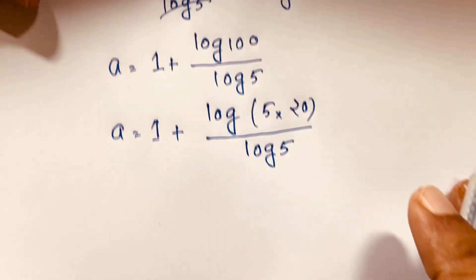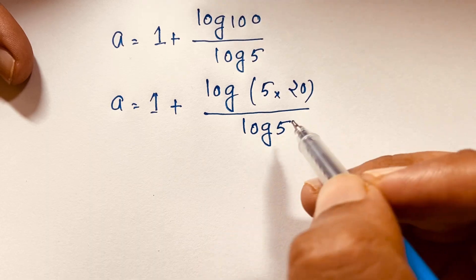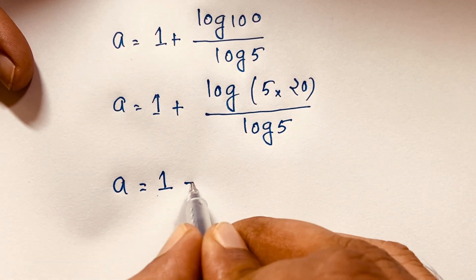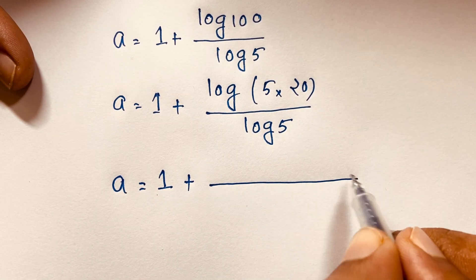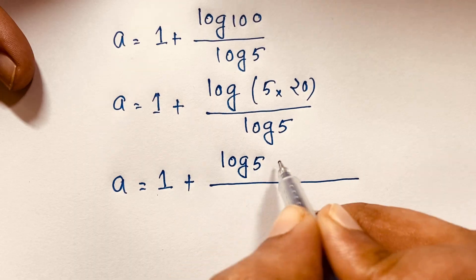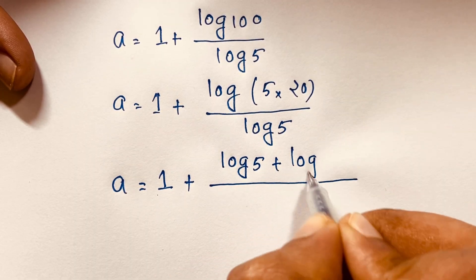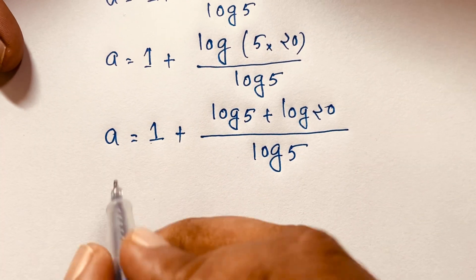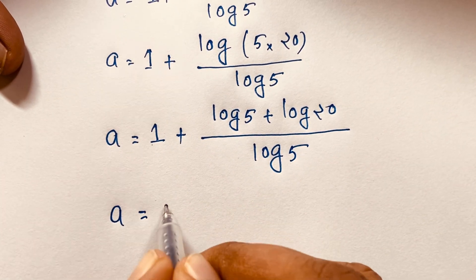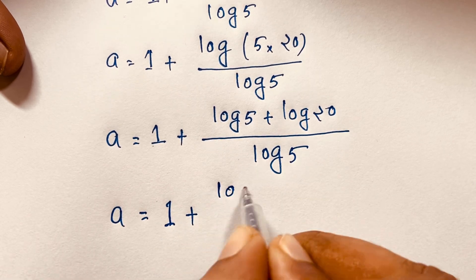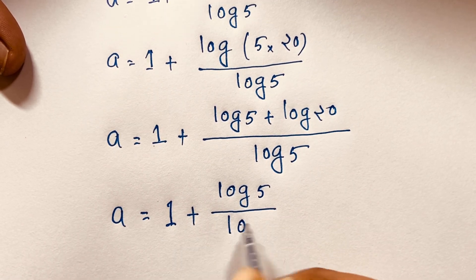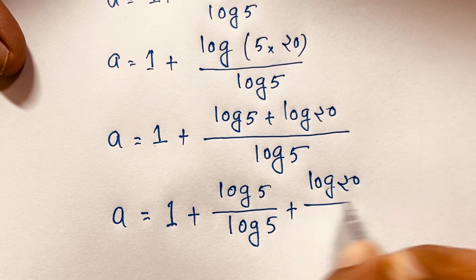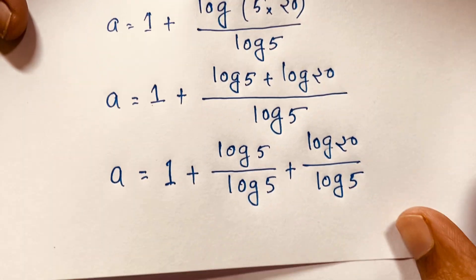I apply the product rule again: log(5 × 20) equals log 5 plus log 20. So it becomes a is equal to 1 plus log 5 plus log 20 over log 5. I then separate this fraction again.